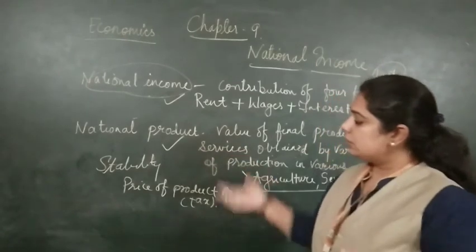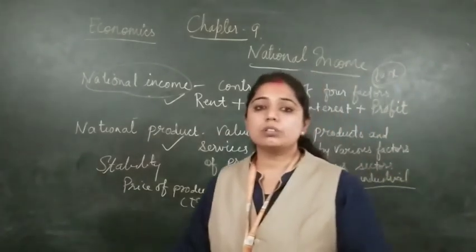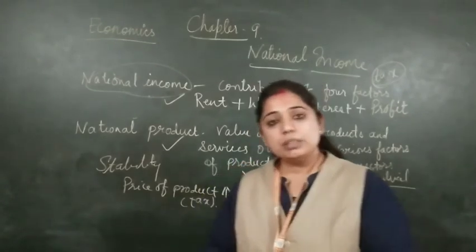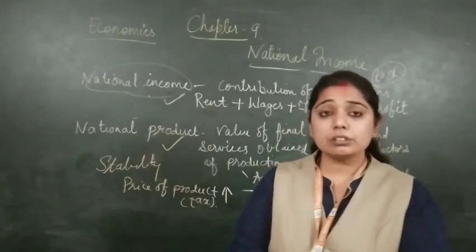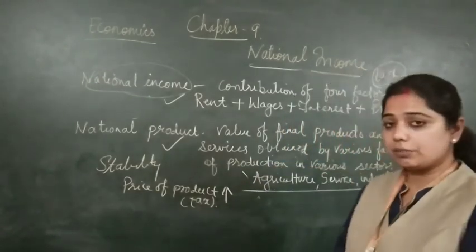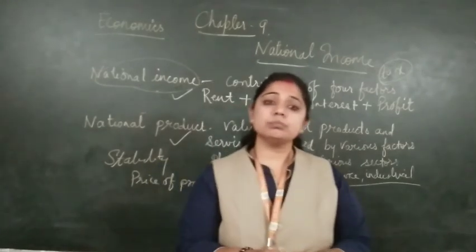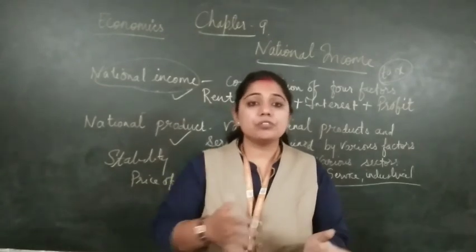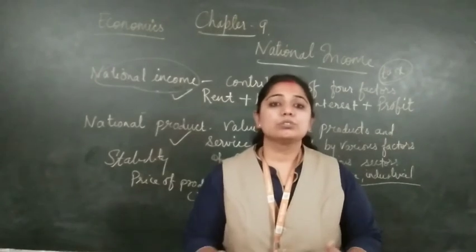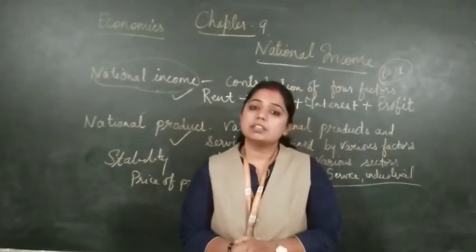To summarize: if tax is included, the national income will be high but the price of the product will be decreased if subsidies or discounts are given by the government. I hope you all have understood the introduction part properly, the concept of national income, the definitions given by the three economists from different points of view, and how national income and national product are different. If you have any doubts, we will clear them in the live sessions. Good day and take care of yourself. Thank you.